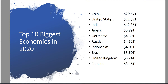BRIC stands for B — Brazil, R — Russia, I — India, and C — China. China and India together make up nearly 3 billion people, as opposed to our 350 million people.